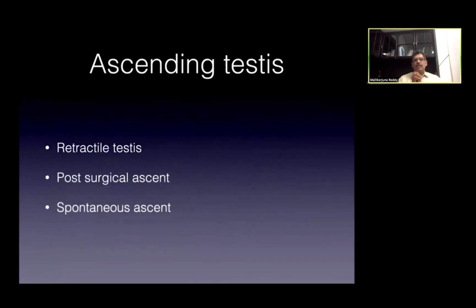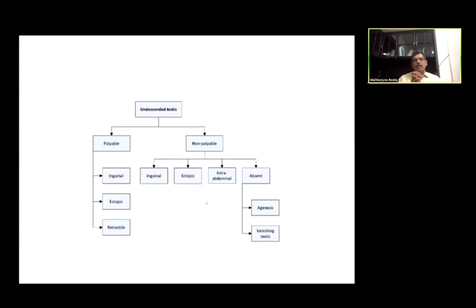The management algorithm: start at around six months, as testes rarely descend after this age. Most treatments should be completed by 12 months; the EAU recommends latest by 18 months. Medical therapy has a success rate of about 20% and is not recommended. For the algorithm: if undescended testes is palpable, determine if it is inguinal, ectopic, or retractile. If non-palpable, determine if it is in the inguinal region, ectopic, intra-abdominal, or absent — which can only be confirmed via diagnostic laparoscopy.